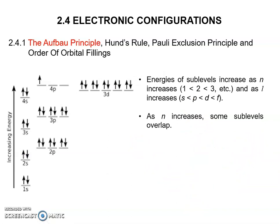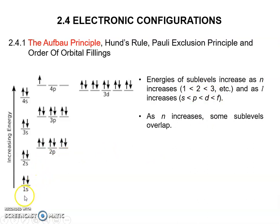Next is the energy level. Energies of sub-levels increase as n increases. For example, level 1 is the lowest energy, followed by 2 and then 3. As l increases, for example 2s and 2p, the energy level for 2s is lower than 2p.